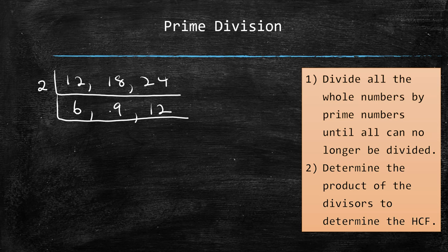Then we see that each one of them can also be divided by 3. So we divide by 3 and get 2, 3, and 4. Now there is no other prime number that we can divide all by. So then determine the product of the divisors to determine the HCF.